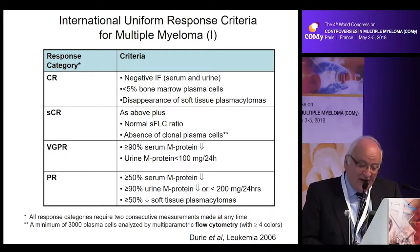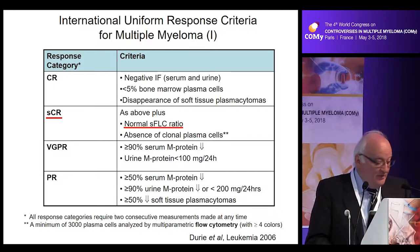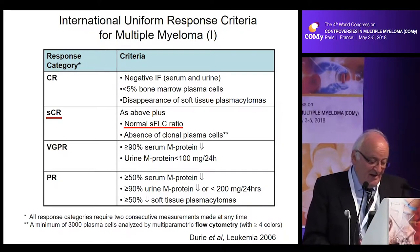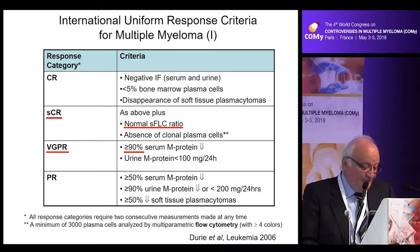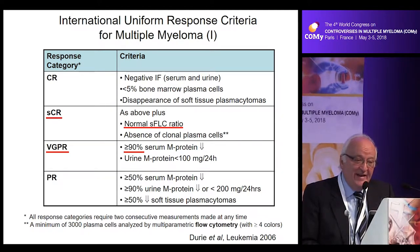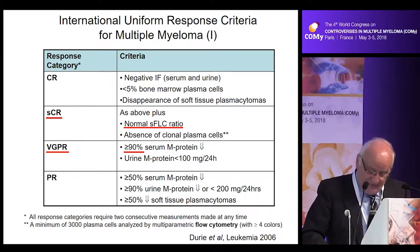The International Myeloma Working Group defined stringent CR as CR per the EBMT criteria plus a normal serum free light chain ratio and the absence of clonal plasma cells in the bone marrow. They also defined VGPR, requiring at least 90% reduction in serum M-protein and urine protein excretion lower than 100 milligrams per 24 hours. Partial response criteria remain similar to the EBMT criteria.